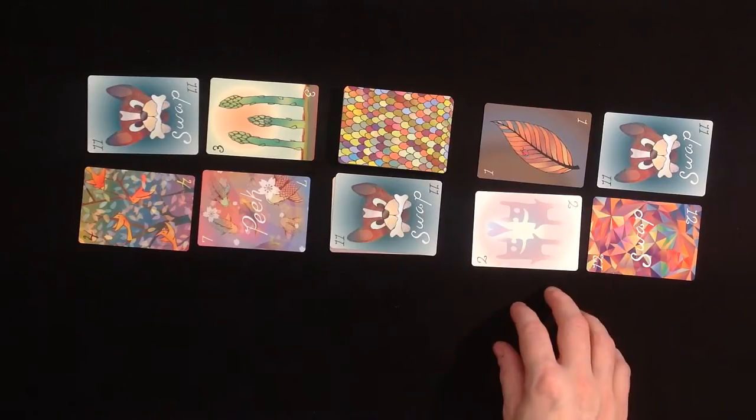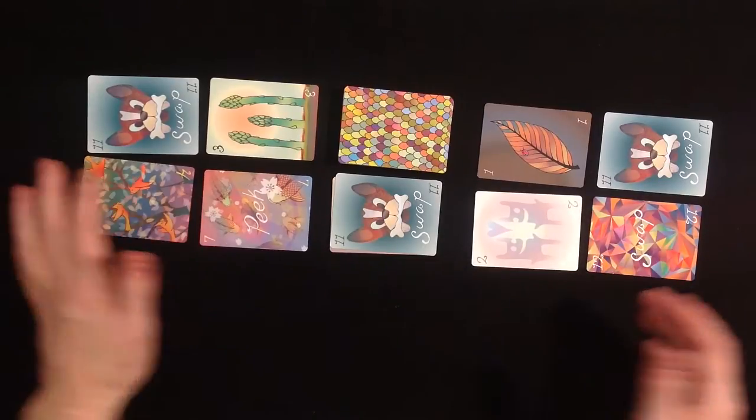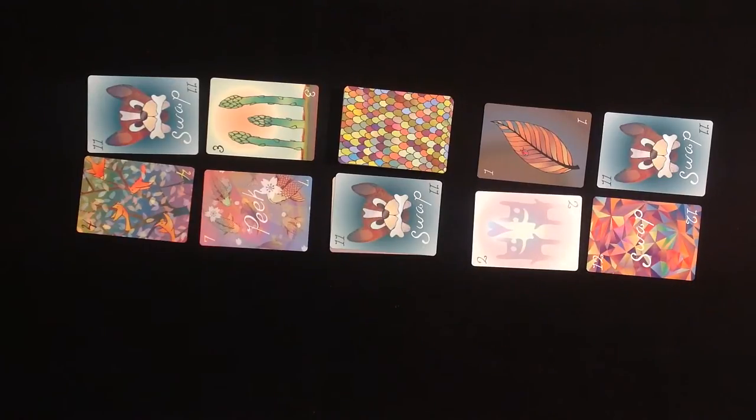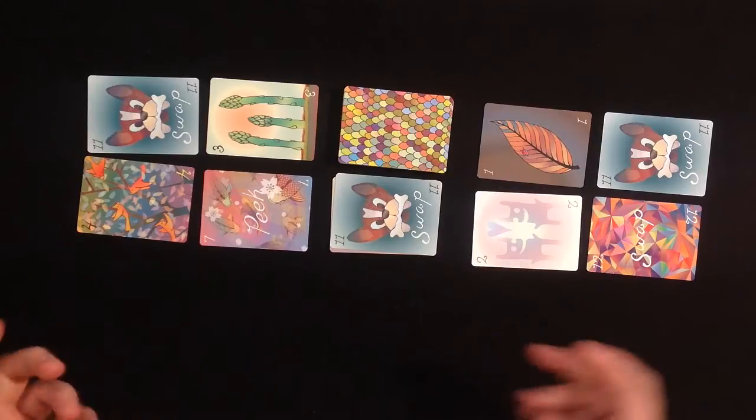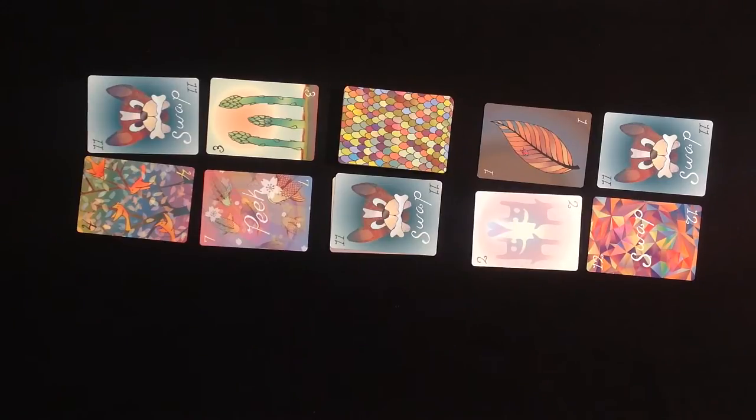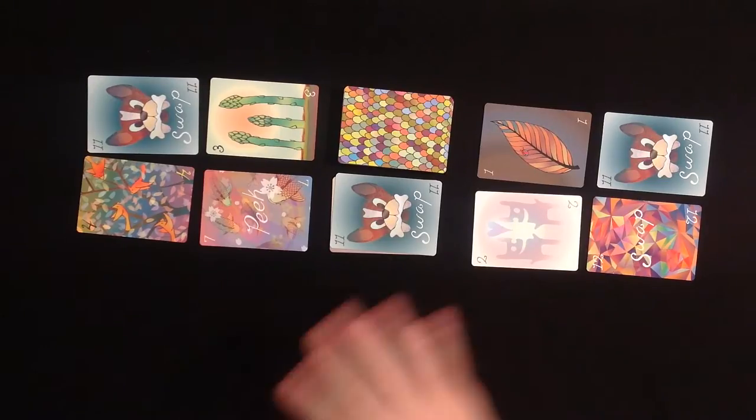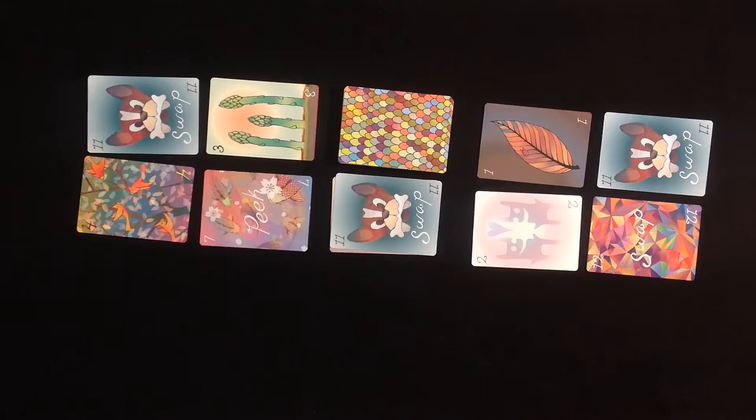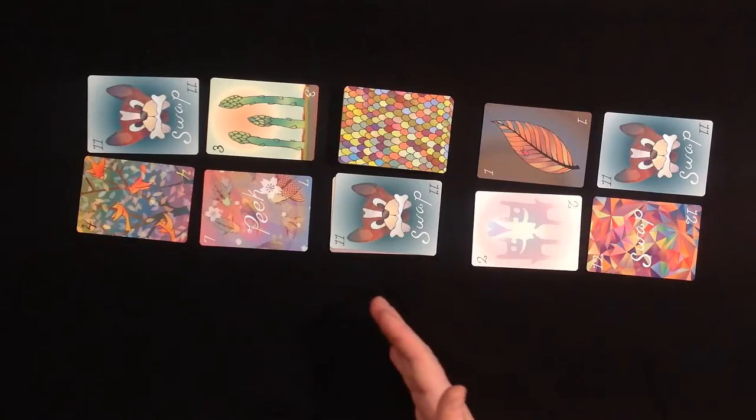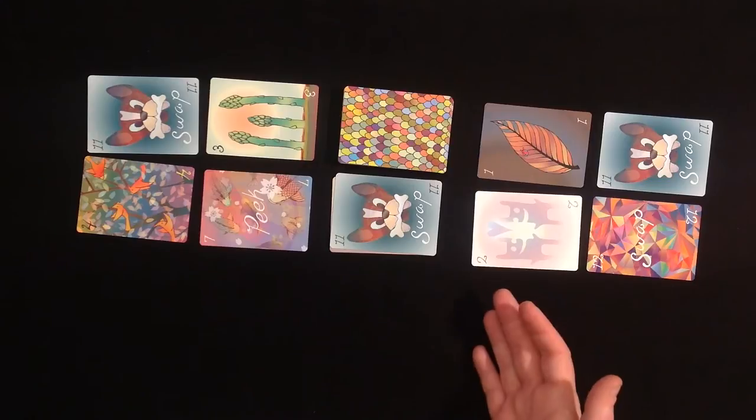You write down your score. A round can take from two minutes to ten minutes, depending on how the play evolves. And you play as many rounds until one player has minus hundred, or more, or less, in this case, minus hundred or less. And then that was the last round, and whoever has the least negative points is the winner.